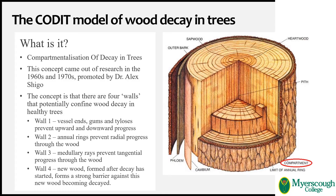The key concept of the CODIT model for this short hot take is that there are structures analogous to walls that potentially can confine wood decay within a healthy standing tree. These walls — they're not actually walls — are typically listed in order of suggested strength from the weakest to the strongest. Wall one is any obstruction that might slow or prevent movement of the decay up and down the tree stem or branch.